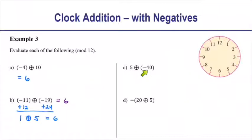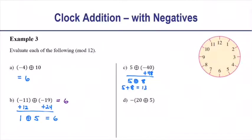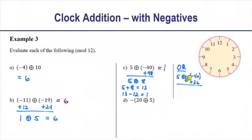For part C: 5 circle-plus negative 40. I don't want to deal with negative 40, so I'll add 48 — a multiple of 12 — to restate the problem as 5 circle-plus 8. Then 5 plus 8 is 13, and 13 minus 12 is 1, so 5 circle-plus negative 40 is 1. As an alternate approach: instead of adding 48, you could add 36. Then negative 40 plus 36 is negative 4, giving 5 plus negative 4, which also equals 1. Either way is fine.